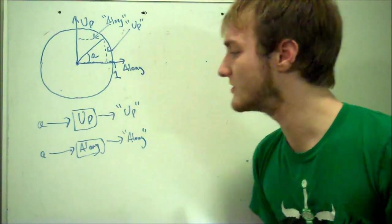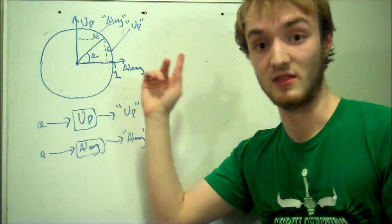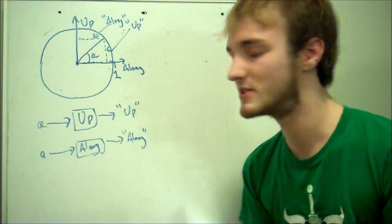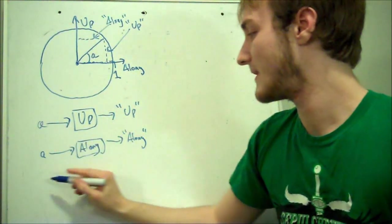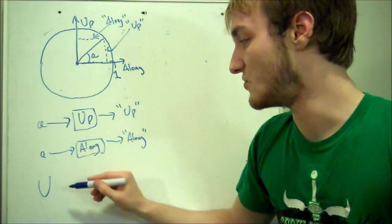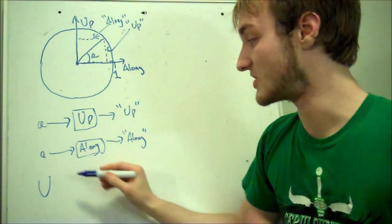Now, as this is all well and good to invent these machines, that solves our problem, but you can't use them in a mathematical equation. You can't draw all that out. So we're going to make some notation for it. And what we're going to do is we're going to write a big U for the up machine to mean I'm using the up machine.